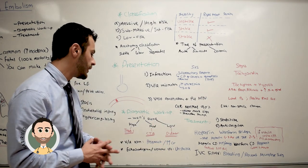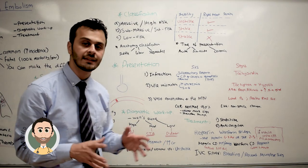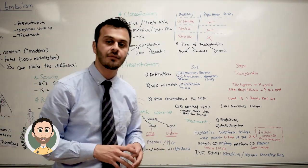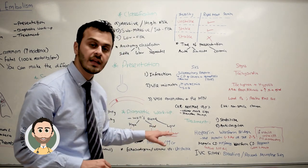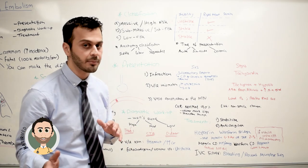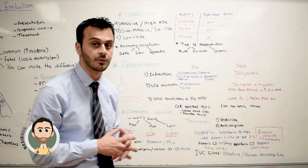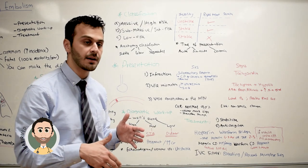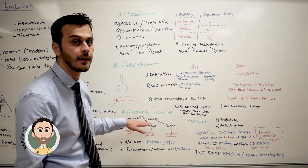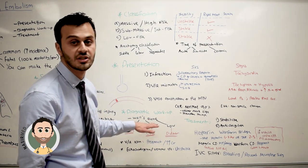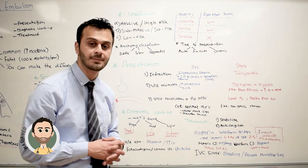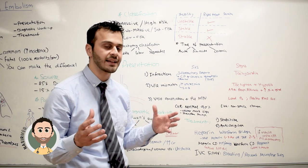Lastly, if you have a low suspicion of pulmonary embolism, you can get a D-dimer just to rule it out. If D-dimer is negative, you rule out pulmonary embolism. However, if D-dimer is positive, that does not rule in or rule out pulmonary embolism, and you will need more detailed imaging such as CT angiogram. D-dimer is nonspecific because it's an acute phase reactant.